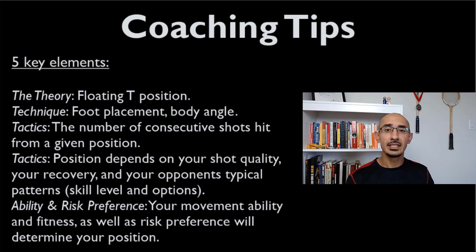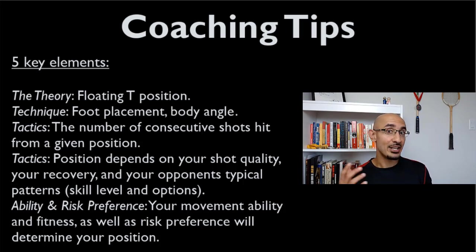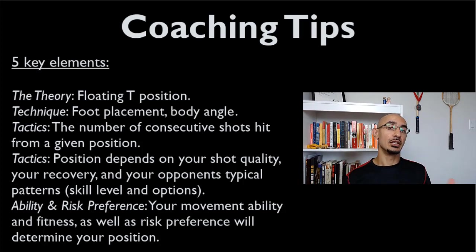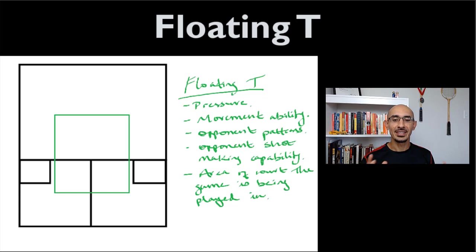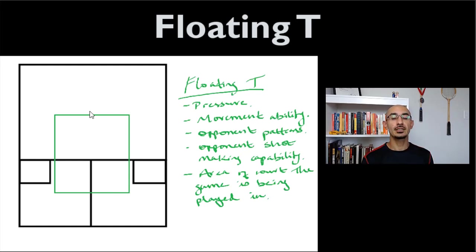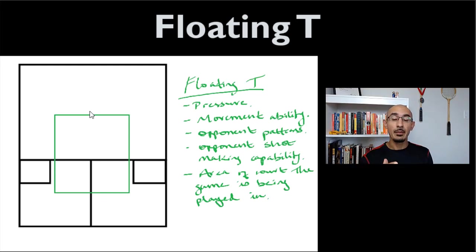It also depends on your movement ability and your risk preference. If you like to hedge your bets, you can start moving and cheat over more than you normally would, expecting your opponent to hit a particular shot. The floating T can fall anywhere within a range — a green box in the middle of the court — and that is still technically a correct T position, because players are being dynamic relative to how the game is being played and their capabilities.